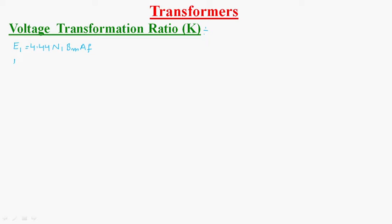Now, the EMF induced per turn — E1 divided by N1 — is equal to 4.44 BM into A into F. Similarly, E2 by N2 is equal to 4.44 BM into A into F.